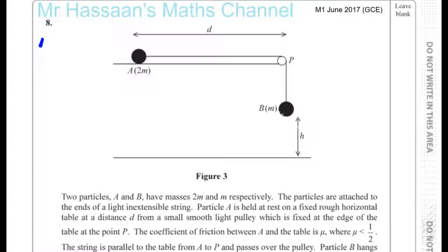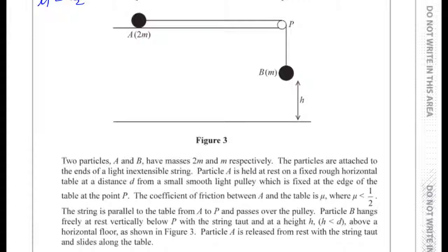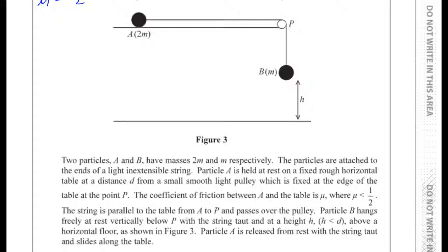They didn't give us the exact value of mu, but they told us that mu is less than a half. The string is parallel to the table from A to P and passes over the pulley. Particle B hangs freely at rest, vertically below P, with the string taut and at a height H, where H is less than D — that means A will reach the pulley. When B hits the ground, A still hasn't reached the pulley. Particle A is released from rest with the string taut and slides along the table.